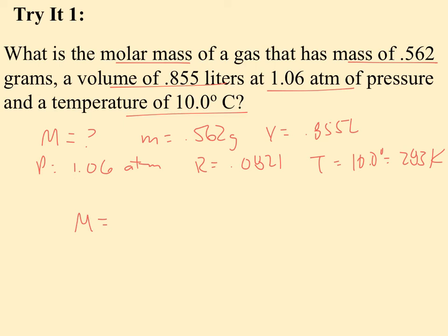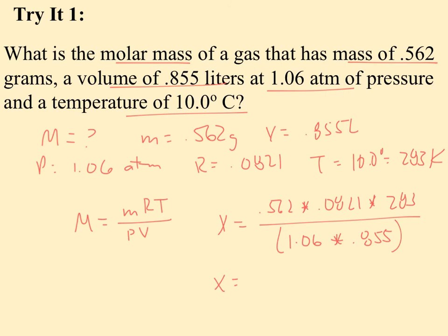So what's the only equation I have that fits all of this? Well, since density is not a part of this one, I would use big M equals little mRT over PV. So when I plug in, big M is what I want to find, so that's going to be nice, no rearranging. 0.562 times 0.0821 times 283 divided by 1.06 times 0.855. So my final value for molar mass is 14.4, carrying just the three sig figs. And since it's molar mass, this is going to be grams per mole.